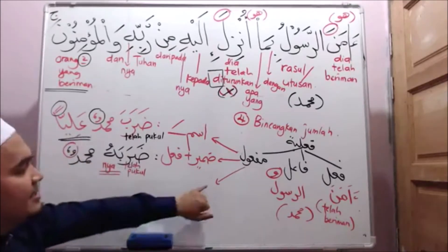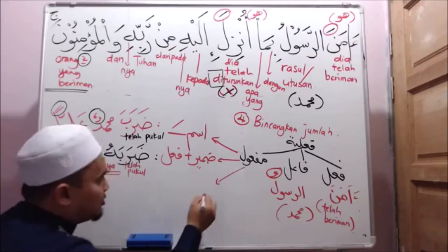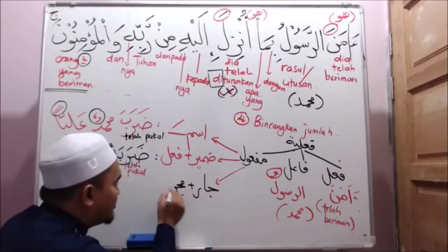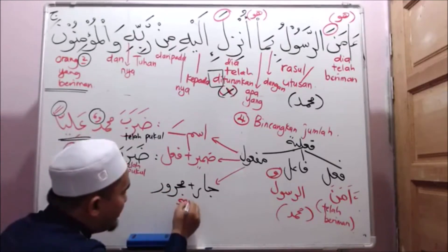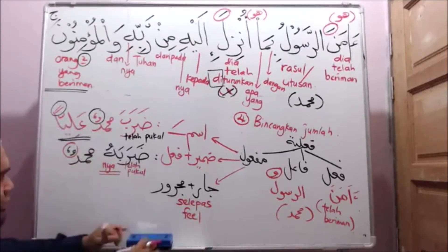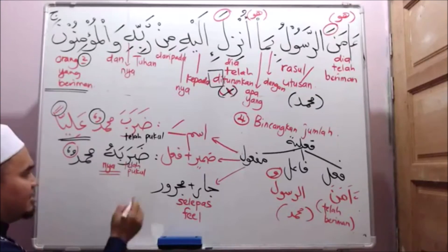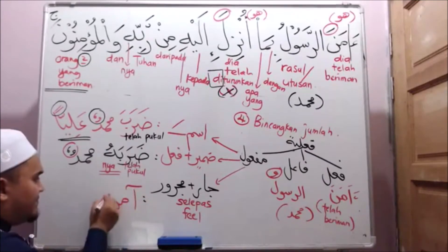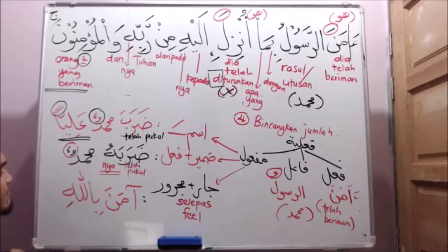Sekarang yang ketiga. Yang ketiga maf'ul kita ialah dalam bentuk jar dan majrur tuan-tuan. Ini tajuk perbahasan kita. Jar majrur ini berada selepas fe'il. Contohnya: Amanah Muhammad Billah - biasanya dalam Al-Quran dia akan tulis macam ni: Amanah Billah. Sama dalam ayat kita hari ni: Amanah Billah.